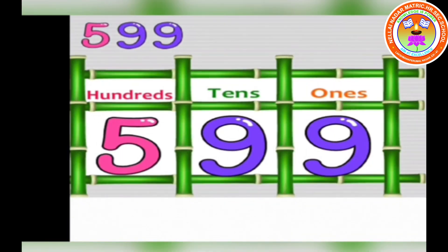See the picture: 599. The ones place is 9, the tens place is 9, and the hundreds place is 5 — so the number is 599.